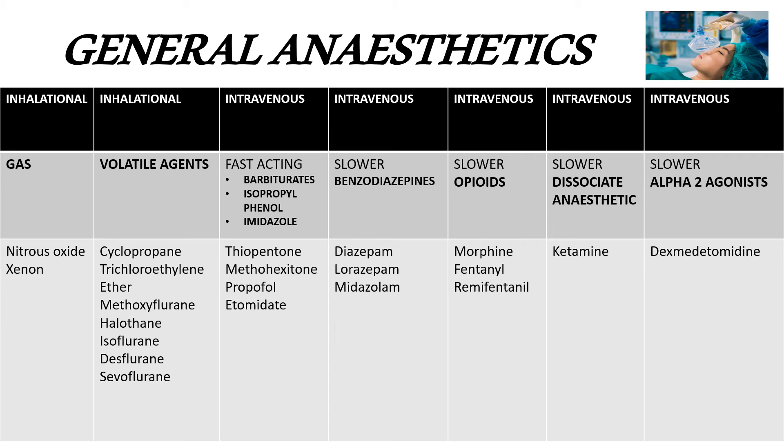The remaining medications have a different site of action, which will be mentioned individually. The next group is opioids — examples include morphine, fentanyl, and remifentanil — and their site of action is of course the opioid receptors. They have a slower onset of action.